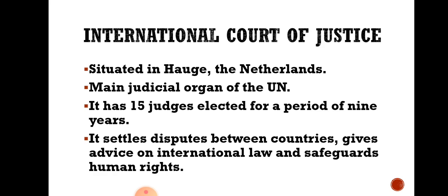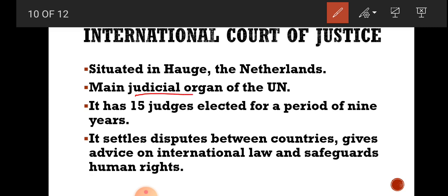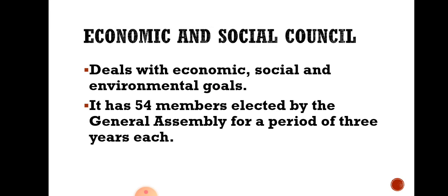The International Court of Justice is the judicial organ of the United Nations. Just as in India we have district courts, high courts, and the Supreme Court, similarly, this is the judicial organ of the United Nations. It has 15 judges who are elected for nine years. Its main function is to settle disputes — if any dispute or problem arises between two countries, it resolves that. The ICJ does not create new laws but ensures that existing international laws are followed by all member countries. It also works for human rights.